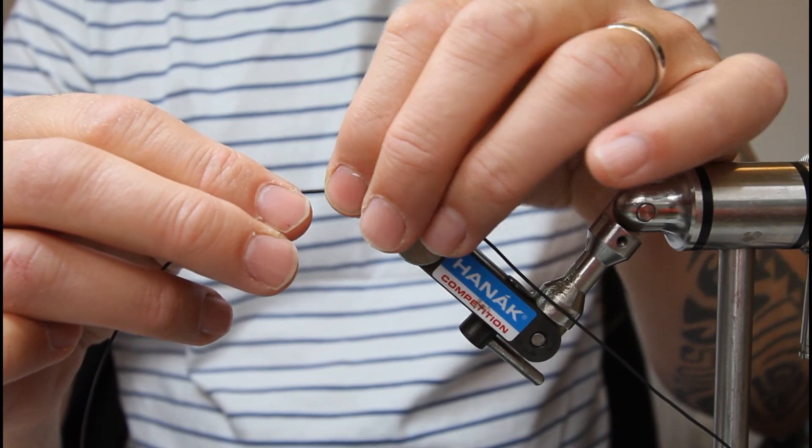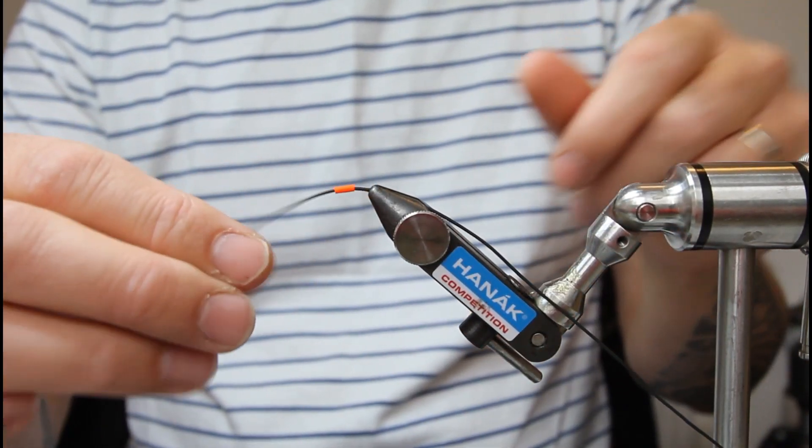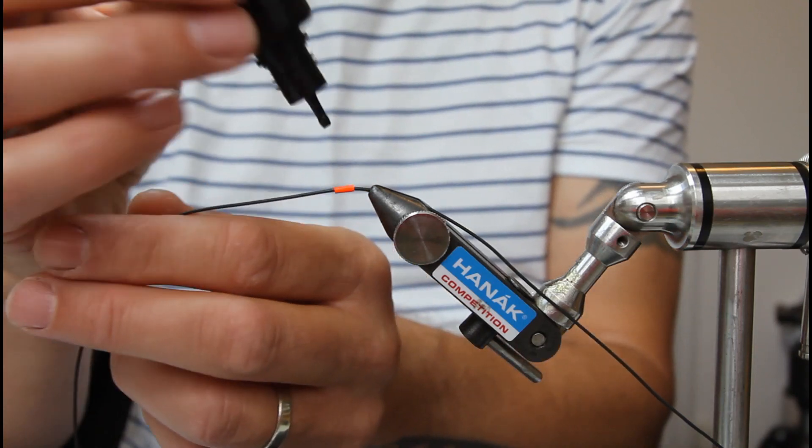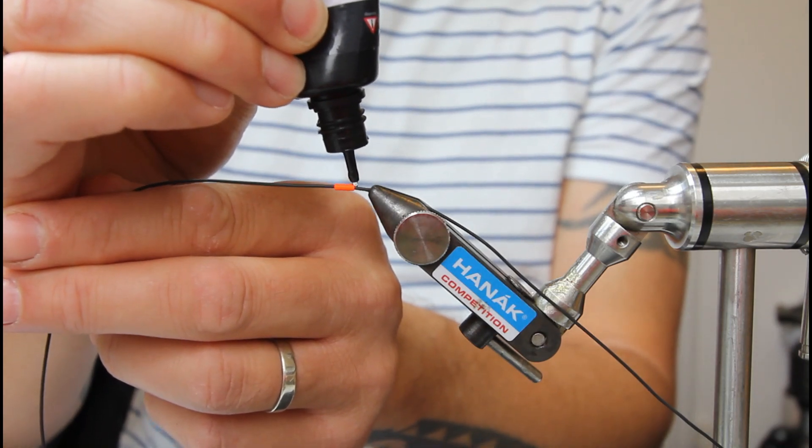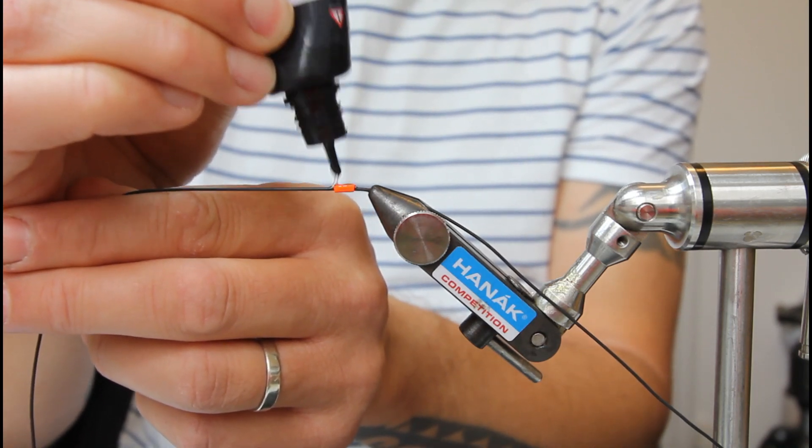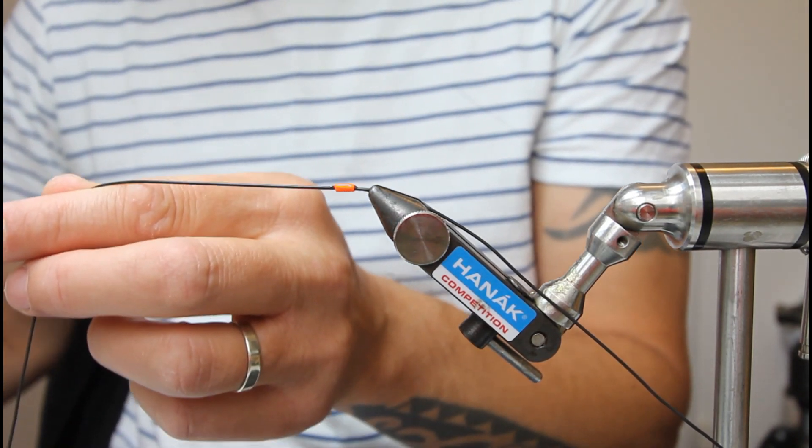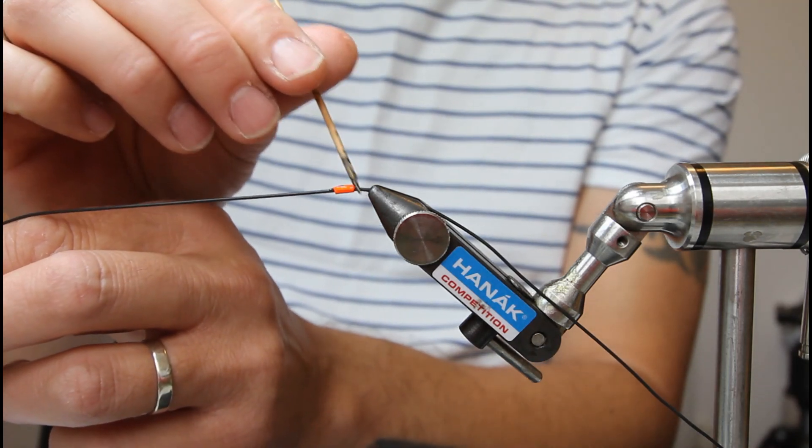Then come in with some UV resin—doesn't matter what you use, just use whatever you like. Make sure that you cover everything and there's no bumps. Doesn't matter if it's lumpy, as long as that lump's smooth it'll run through the rod rings, not a problem.